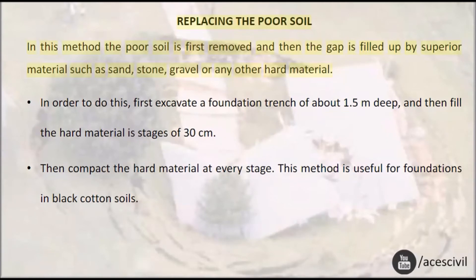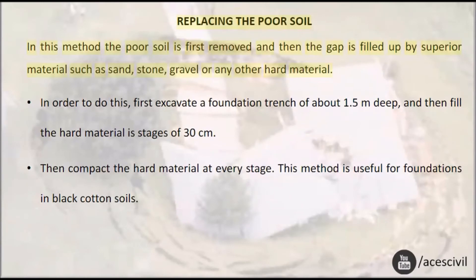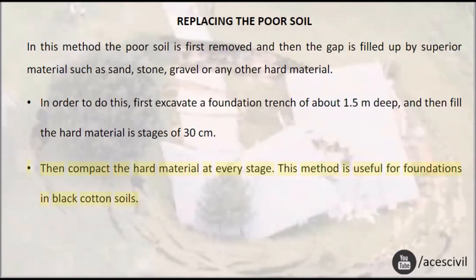Replacing the poor soil: In this method, the poor soil is first removed and then the gap is filled up by superior material such as sand, stone, gravel, or any other hard material. First, excavate a foundation trench of about 1.5 m deep, then fill the hard material in stages of 30 cm, and compact the hard material at every stage. This method is useful for foundations in black cotton soils.